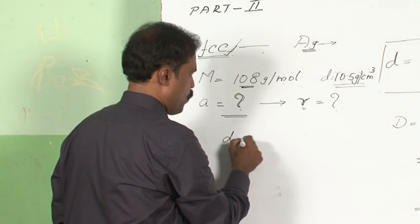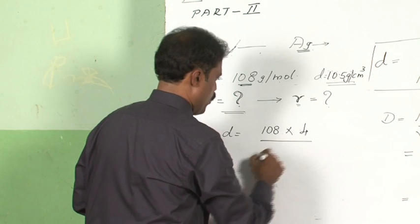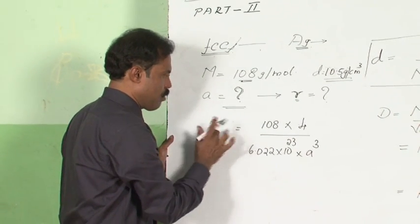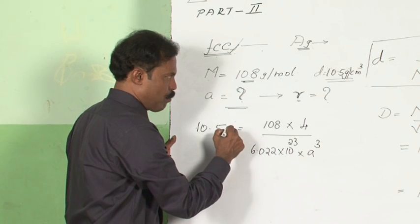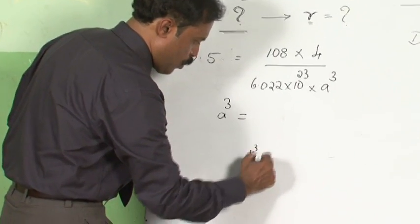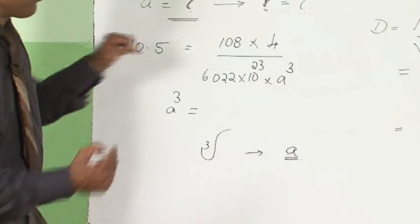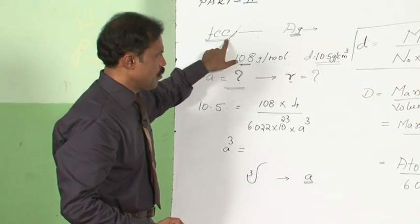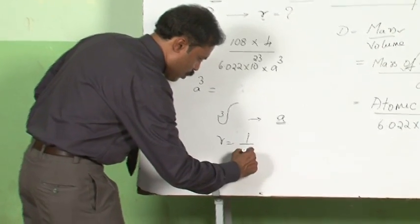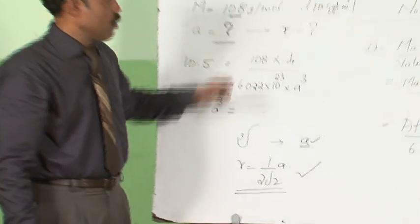Once we have the value of a, we find the radius using the FCC relation: R = (1 / 2√2) · a. Substituting the value of a gives the radius of the silver atom. This is how you solve this numerical.